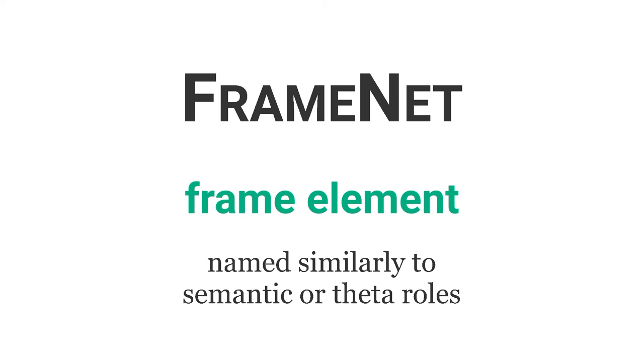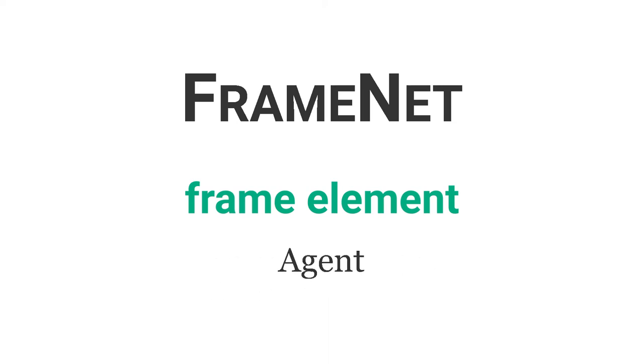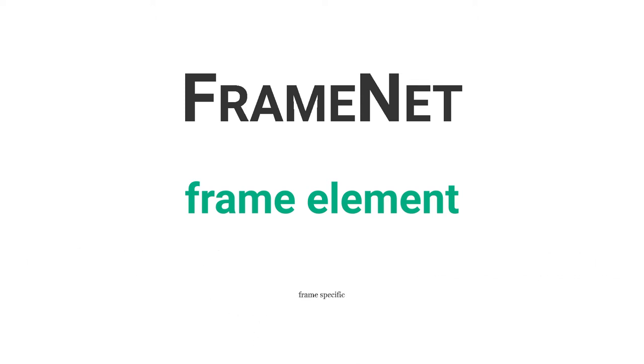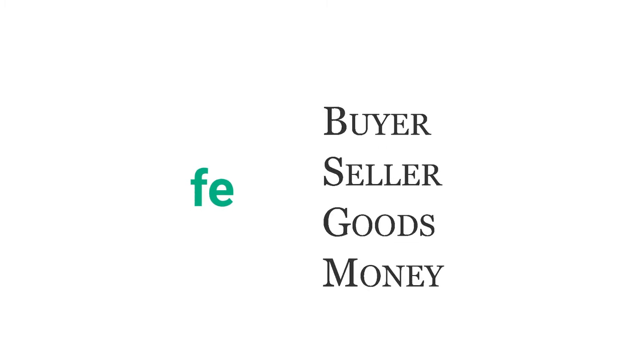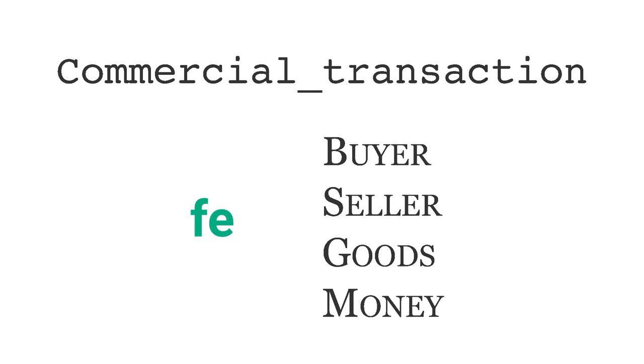Some frame elements in FrameNet can be named in a way similar to traditional semantic or theta roles, such as Agent, Patient, and Theme. However, they are frame-specific. This means that each frame element is proposed in a way relevant to one specific frame. So it is pretty common to find frame elements named as buyer, seller, goods, and money in the commercial transaction frame.